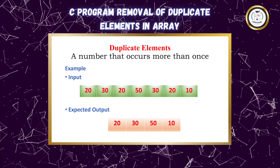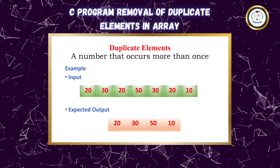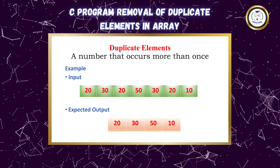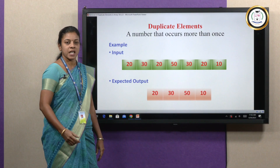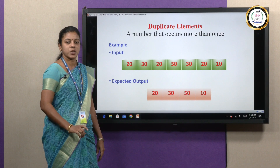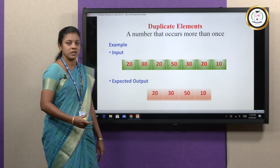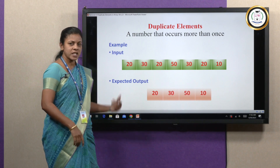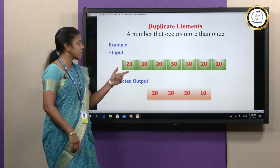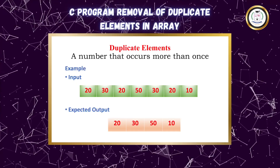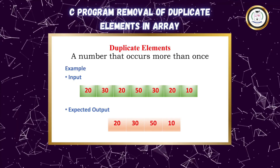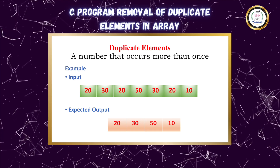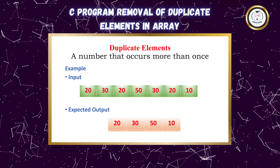Before that, what is an array? It is a group of similar data items stored in a continuous memory location. And what is a duplicate element? A number that occurs more than once in an array.